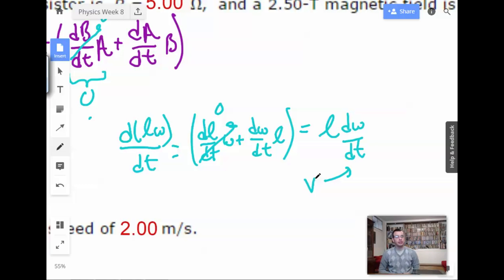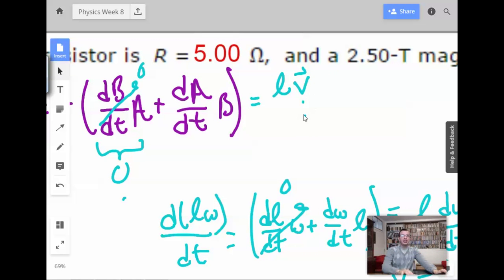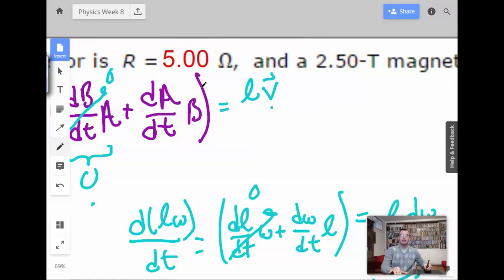And this right here is going to be the velocity that the bar is moving at. The velocity is moving... Or, the bar is moving at a velocity, which is a change in width with respect to time. So, I'm going to rewrite this portion in here as Lv. I'm going to put a little vector up here just so it's obviously a velocity and not a voltage. Times B. Yeah, it looks good.